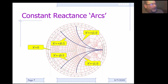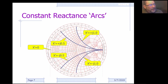You also have what are called constant reactance arcs. On the top side, any arc on these arcing lines are constant inductance lines — no matter where you are on that line, your inductor value is going to be the same. Likewise, on the mirror side below, you have constant capacitance lines — no matter where you are on that line, you're at constant capacitance.